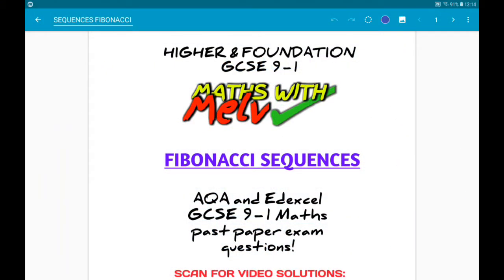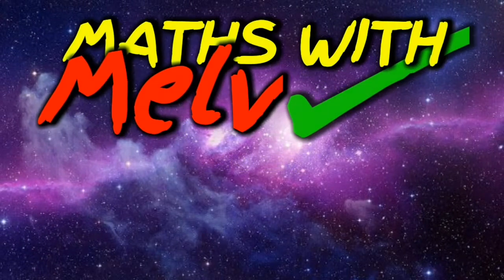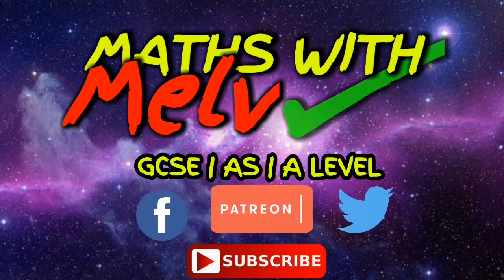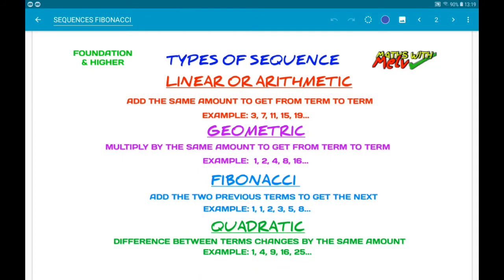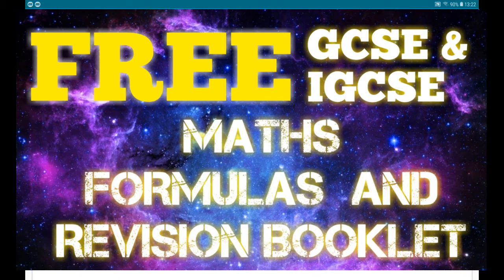In this one, we are looking at past paper exam questions on Fibonacci type sequences. If you download the questions PDF down below, you also get this sheet on different types of sequences. Fibonacci is when we get the next term by adding the two previous terms together. This page is also part of my brand new 50-page GCSE Maths formulas and revision booklet, which you can get down below in the description.